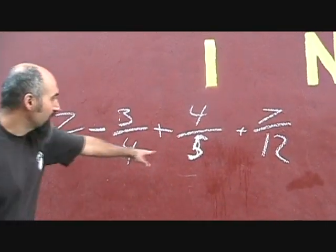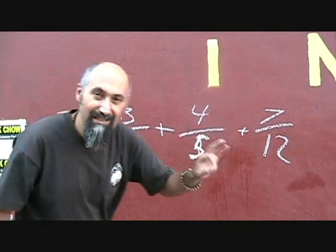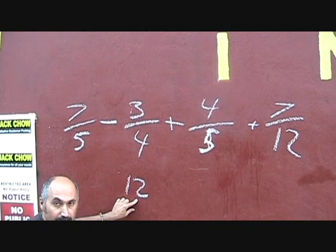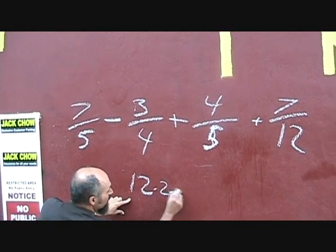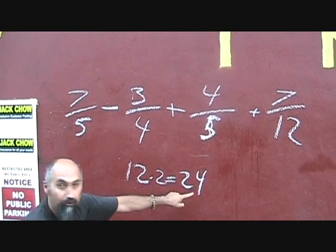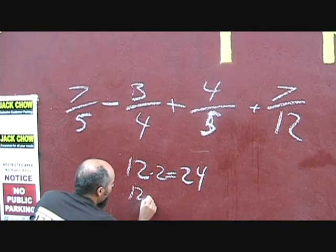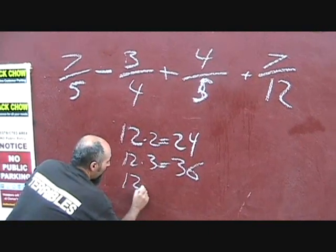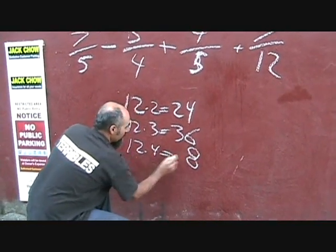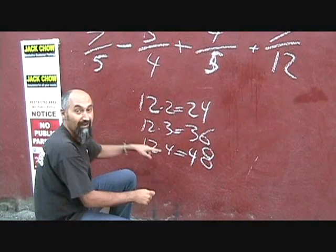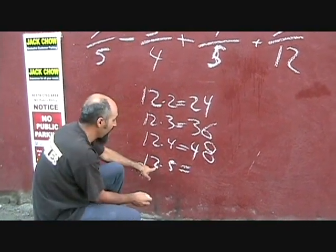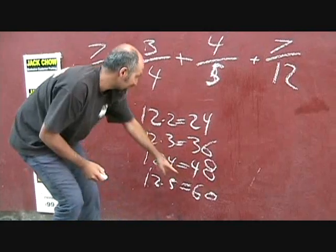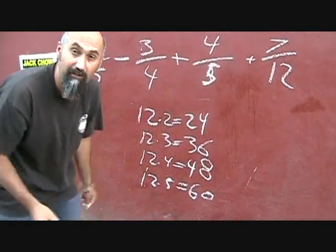So right now you got the biggest number you have is 12. So you're going to try to find the smallest number that 5, 4 and 5 go into. So you multiply 12 by 2, you get 24. Does 5 go into 24? No. 4 goes into it, but 5 doesn't, so continue. 12 times 3 is 36. 4 goes into it, but 5 doesn't. 12 times 4 is 48. 4 goes into it, but 5 doesn't. 12 times 5 is 60. Now 4 goes into 60, 5 goes into 60, and 12 goes into 60, so your common denominator is 60.